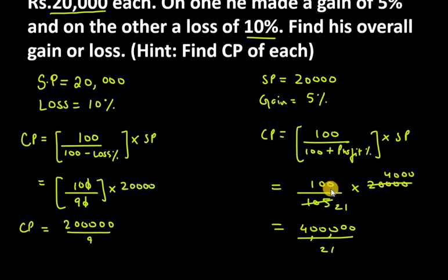So this is cost price of second buffalo. We have both buffaloes' cost price and we have to check if we have gain or loss. So first of all, how much is total selling price?